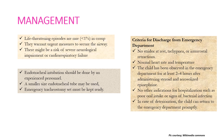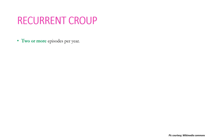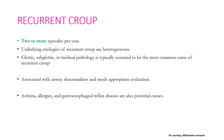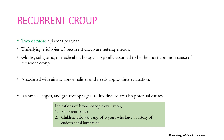Recurrent croup is defined as two or more episodes per year. Underlying etiologies are heterogeneous; glottic, subglottic, or tracheal pathologies are typically the most common causes. Recurrent croup is generally associated with airway abnormalities and requires proper evaluation including bronchoscopy. Asthma, allergies, and gastroesophageal reflux disease are also potential causes. Bronchoscopic evaluation should also be performed in children less than 3 years of age with a history of endotracheal intubation presenting with croup for the first time.